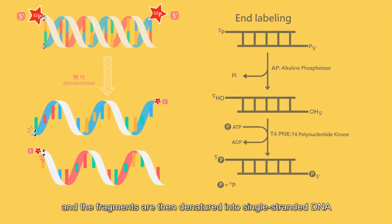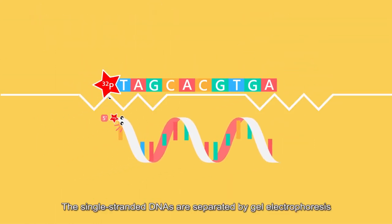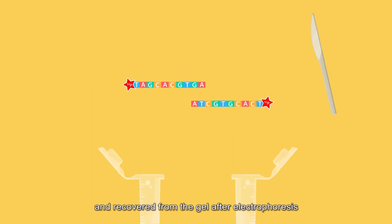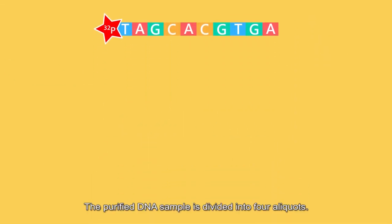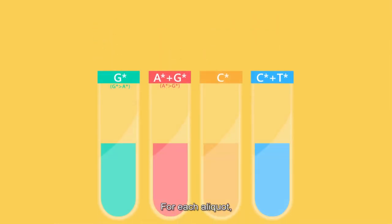The single-stranded DNAs are separated by gel electrophoresis and recovered from the gel after electrophoresis. The purified DNA sample is divided into four aliquots.